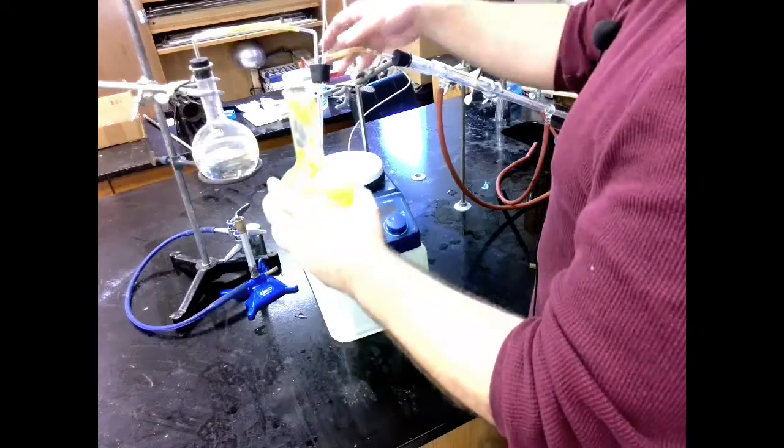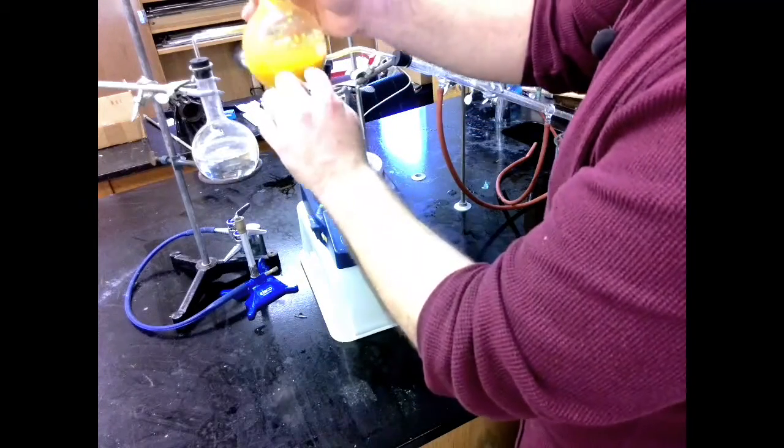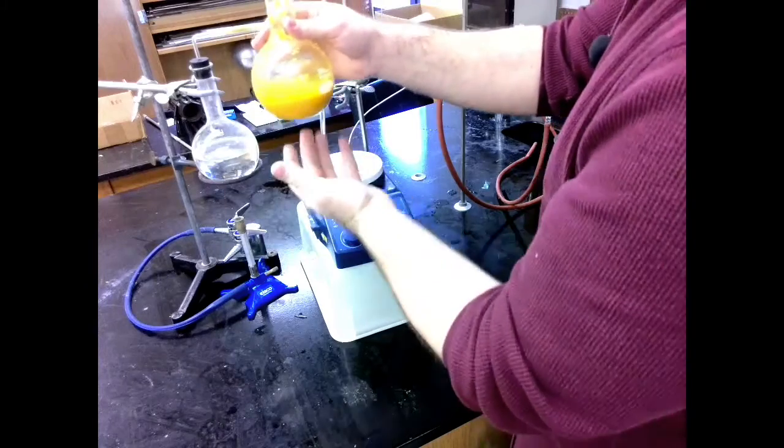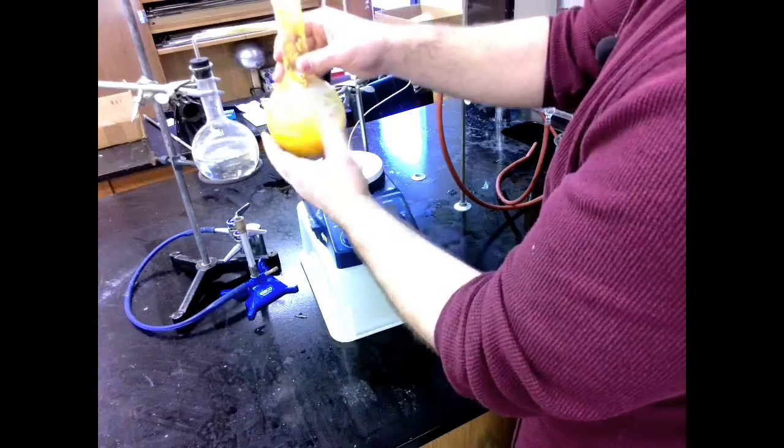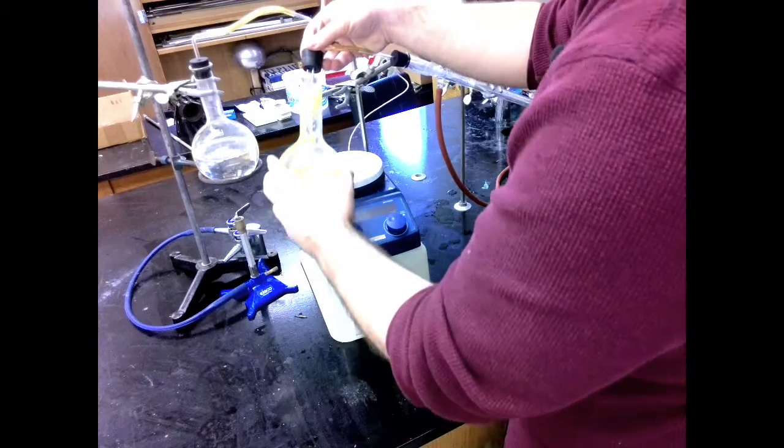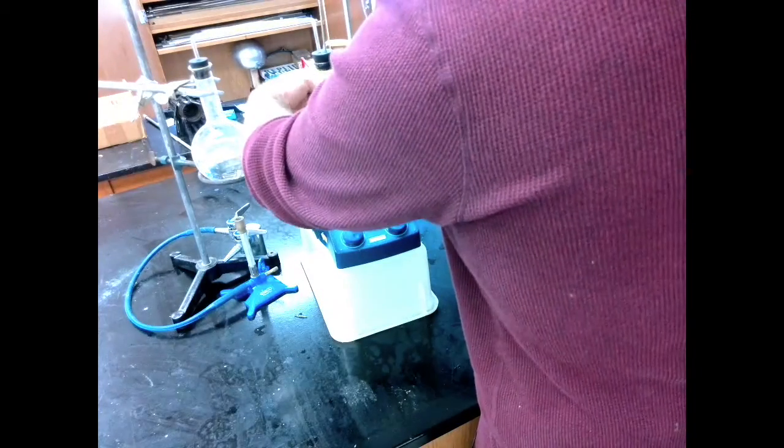I've got my Florence flask with my orange slurry here. This has a lot more water in it than yours will. I had this frozen from a few months ago. So that's where all the excess water came from. But I'm just going to put it on like so. Stick it in there. Get everything clamped down.